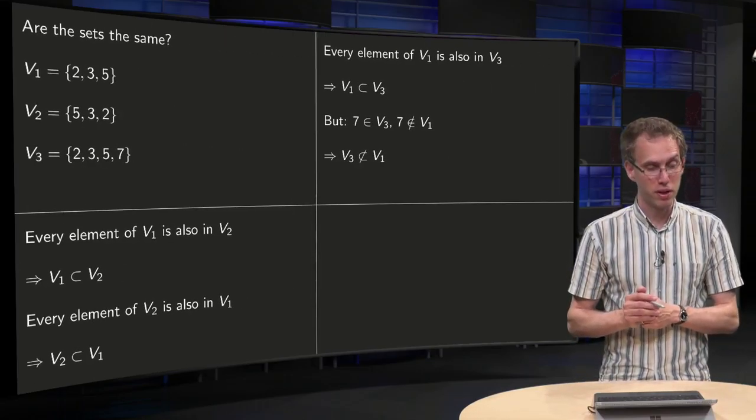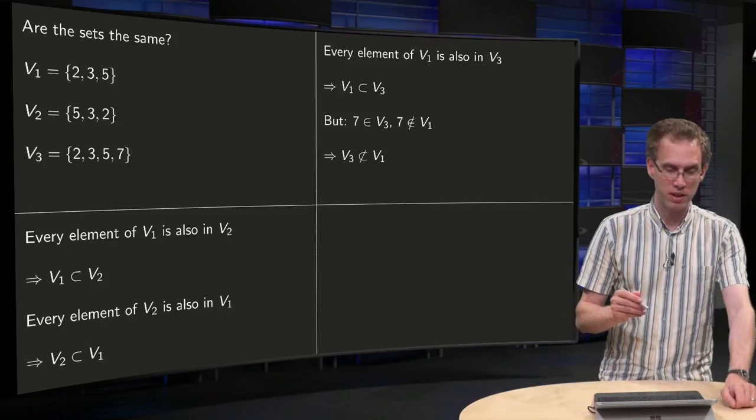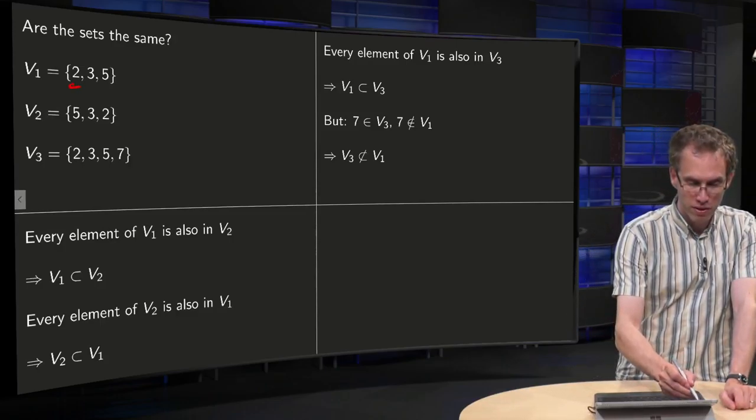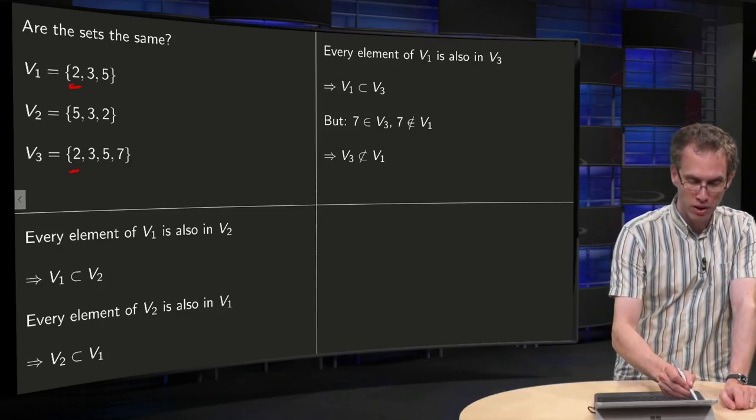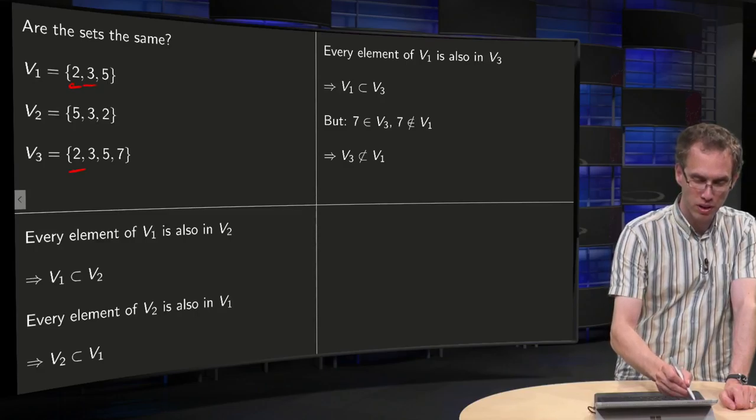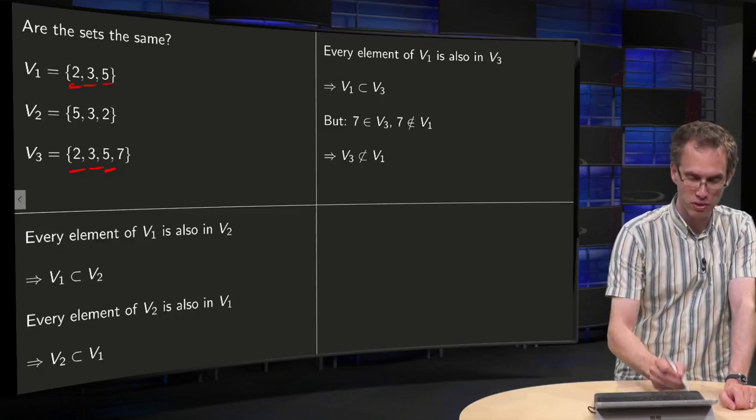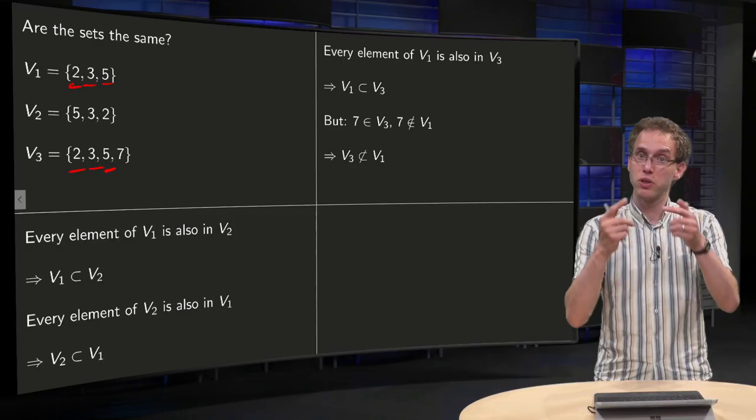Let's try to show that V1 and V3 are the same with the same reasoning. So 2 is also in V3, 3 is also in V3, and 5 is also in V3, so V1 is contained in V3.